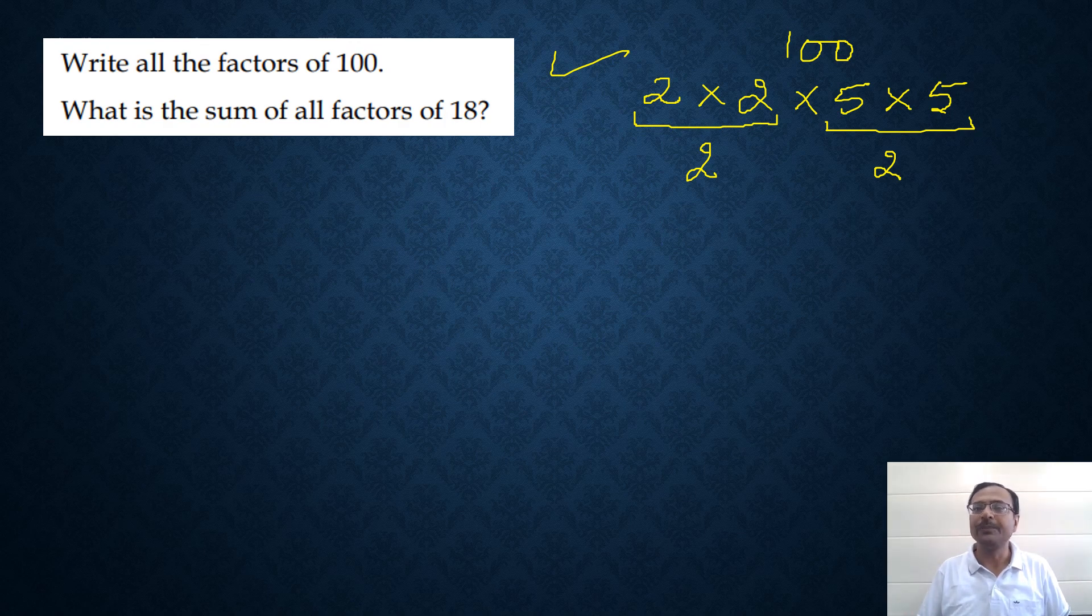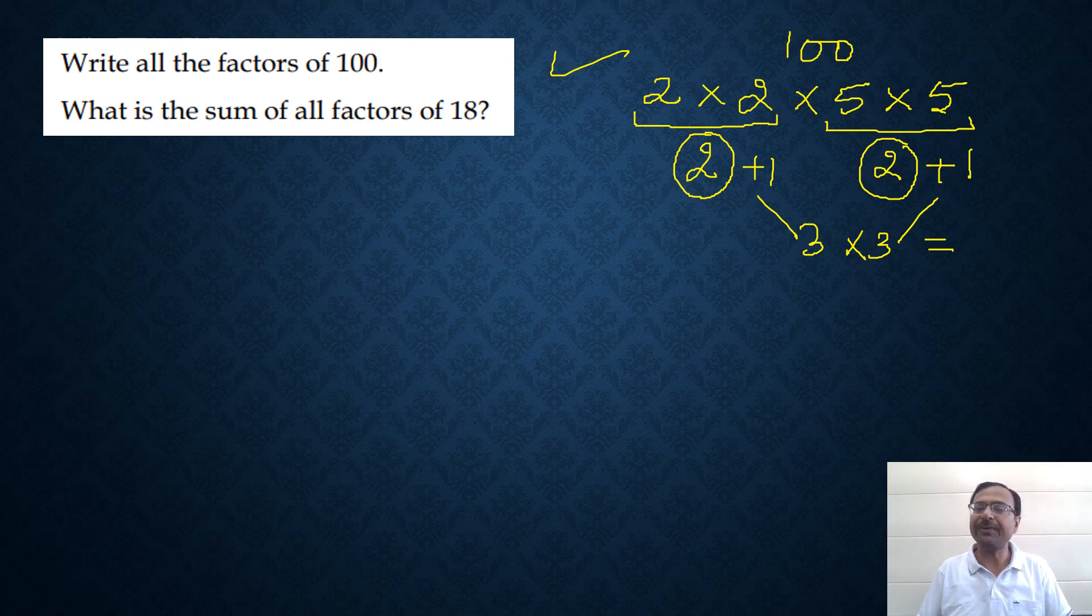What you have to do to ensure that you don't miss out on any factor is just increase these number of factors by 1. Increase these number of factors by 1, so you get 3 and 3. Just multiply them and you get the total number of factors. There are 9 factors of 100. Now let us list all the 9 factors. I'm sure you're not going to miss out on any factor.